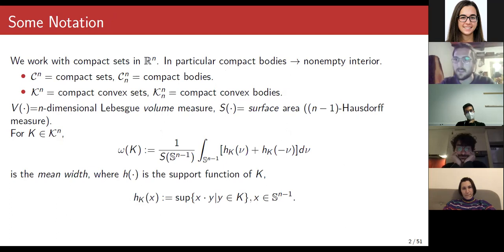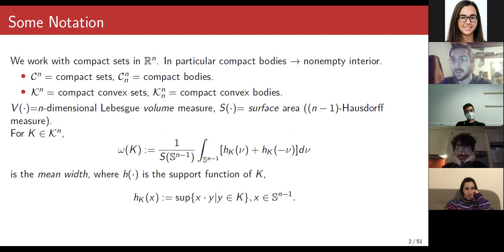The mean width, together with volume and surface, are called intrinsic volumes, which can be categorized by degree of homogeneity. Degree n is the volume, degree n minus one is the surface, degree one is the mean width, and degree zero is the Euler characteristic — though we won't discuss that here.